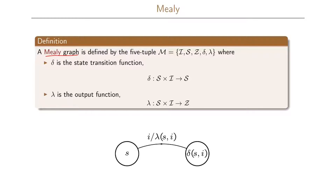A Mealy graph is defined by the five-tuple M which consists of I, S, Z, delta and lambda, where delta is our state transition function. Delta takes as input a state and an input and maps this to a new state. Lambda is the output function, which also takes as input one of the states and one of the inputs and then maps this to an output.